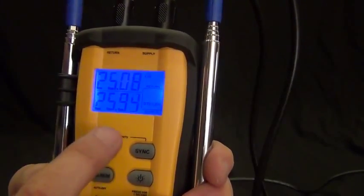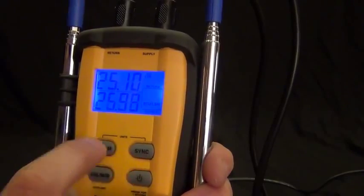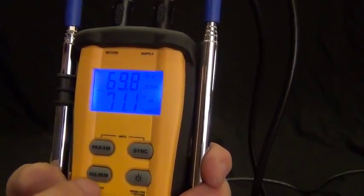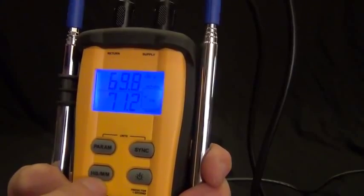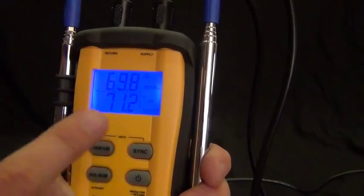Then we have, let's go back to dry bulb. Then we have the hold, the delta, and the min and max button right here. So right now I'm just reading it live. Right now I'm holding it because I got the hold on my screen.